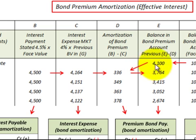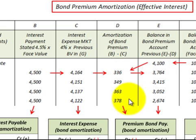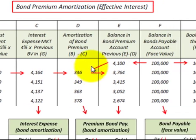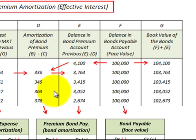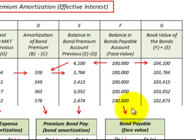In this case we subtract $336 from the $4,100 bond premium balance to get $3,764. This amortization reduces the bond premium balance each period, and thus the book value of the bond also decreases. As the bond premium is fully amortized, we reduce the book value down to the face value at maturity, so both the Bonds Payable account and the book value of the bond equal $100,000 in the last period.